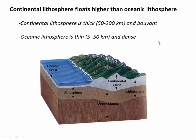Returning to our original question of ocean basins versus continents: because continental lithosphere tends to be thicker and more buoyant, it floats higher than the thinner and more dense oceanic lithosphere. This is what gives root to the fact that continents float above water level and ocean lithosphere floats below water level — they are fundamentally different, and we'll talk about how they form in later videos.